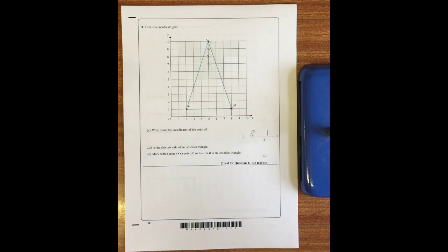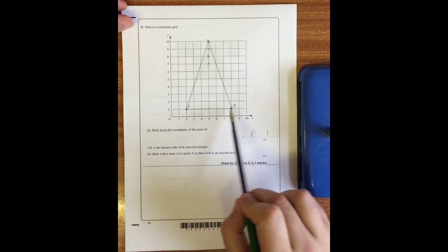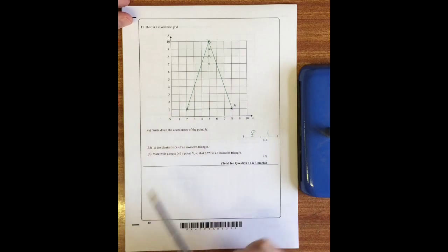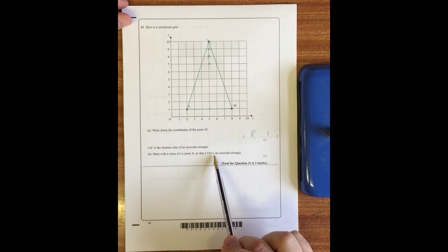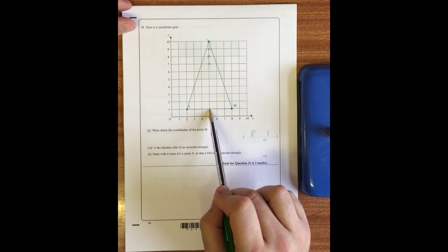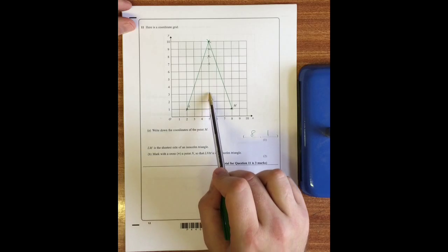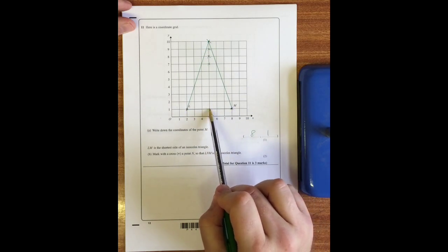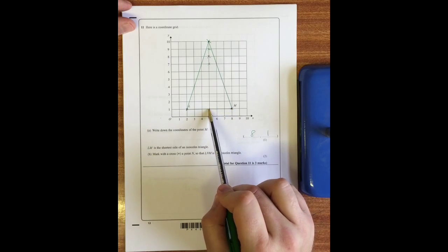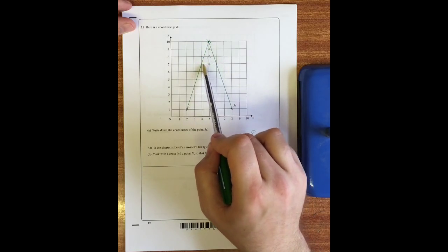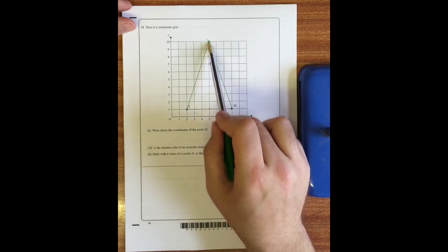Question 11: write down the coordinates of the point M. The point M is here, so you go along the corridor and up the drive, it's at (8,1). LM is the shortest side of an isosceles triangle. Mark with a cross a point N so that LNM is an isosceles triangle. Now we need to mark a point somewhere above the midpoint of this line, so the middle of this line is at five, so we can mark a point along here. Now because this line is six long and that is the shorter side, to be safe I have gone six up and then started anywhere from there. So any of these points anywhere from here upwards would be correct, so any of these coordinates here.